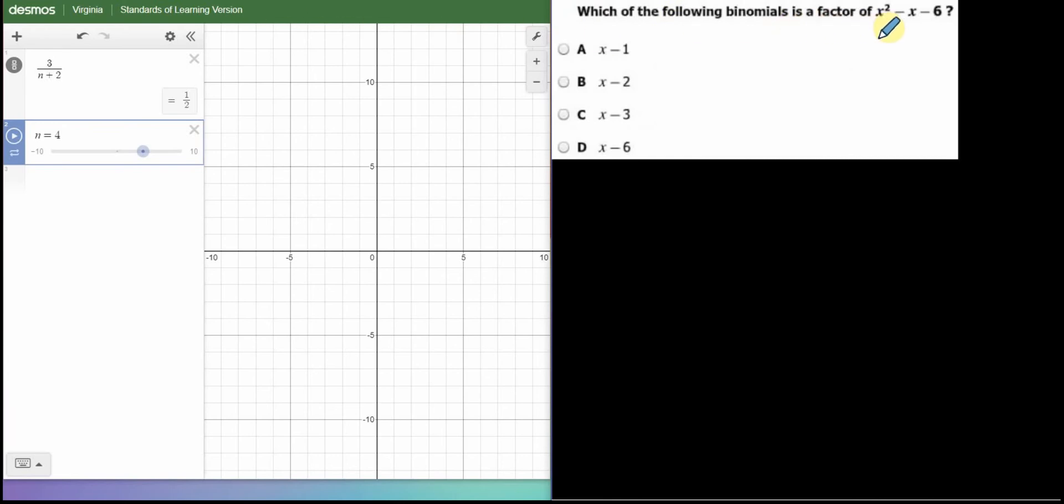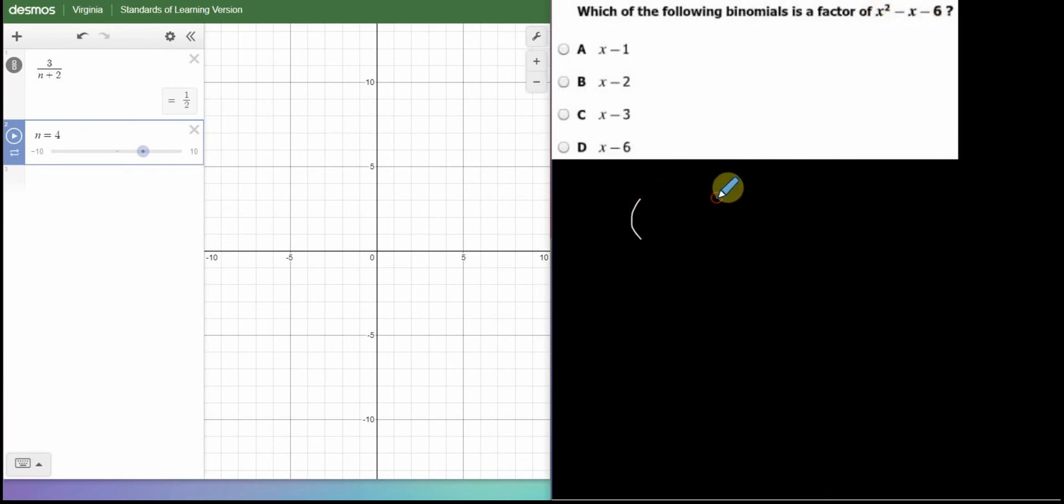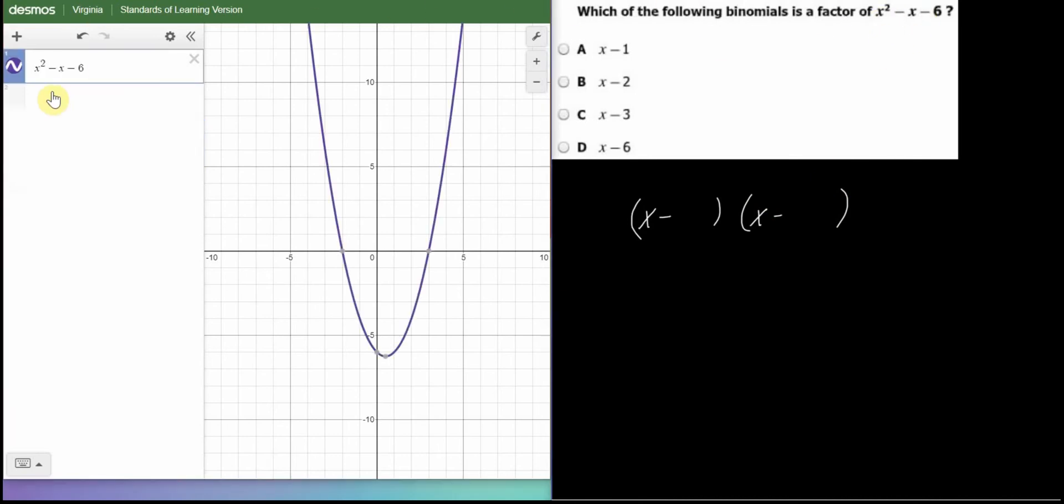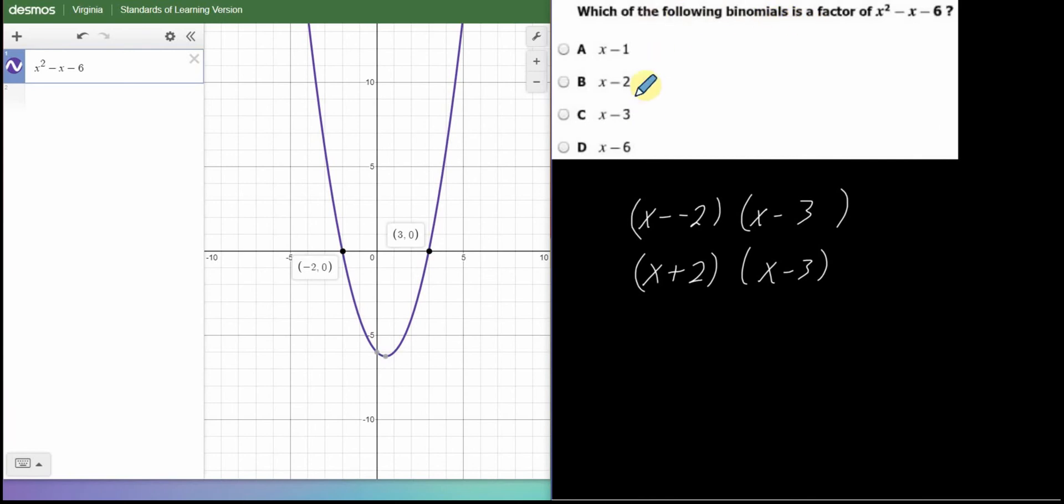Alright, which of the following is a factor of? So, the first thing is, when I go to factor a trinomial, 1, 2, 3 terms, it's going to be x minus something, x minus something. Now, I'm going to look at my graph. I'm going to graph x squared minus x minus 6. I've typed it in. It graphs the parabola, and I'm looking for where it hits the x-axis. It hits it at negative 2 and positive 3. So, negative 2, positive 3. So, you've got a double negative here. So, that's x plus 2 and x minus 3. So, those are my two factors. And, it said which of the following binomials is a factor. It only has one of them here. It only has the x minus 3. So, I've got my answer.